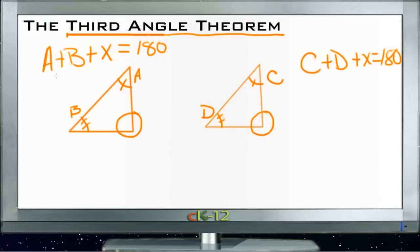So if A and B are congruent to C and D, in other words these two add up to be the same value as these two do, and they must if A is congruent to C and B is congruent to D, then whatever is left over, X, must be the same in both triangles.